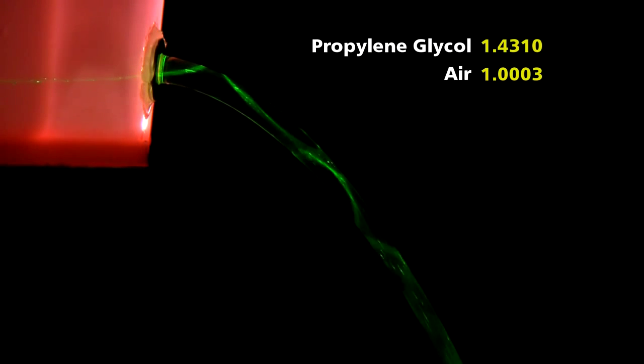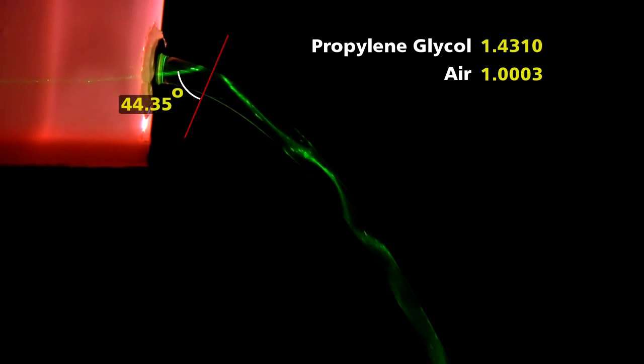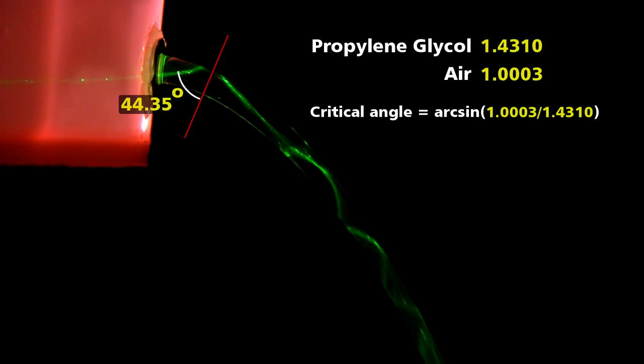For this propylene glycol and air system, as long as a beam hits the surface at an angle greater than 44.35 degrees measured from the normal, it will propagate down the stream via total internal reflection.